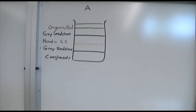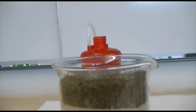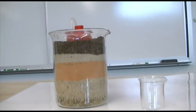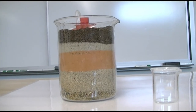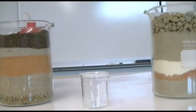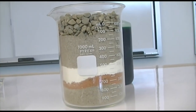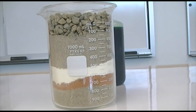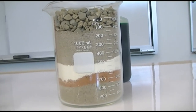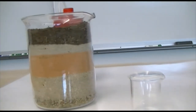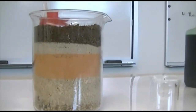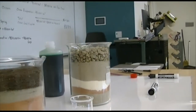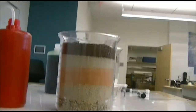We have two beakers: beaker A is the red water beaker and beaker B is the green water beaker. We're going to start by looking at beaker A.